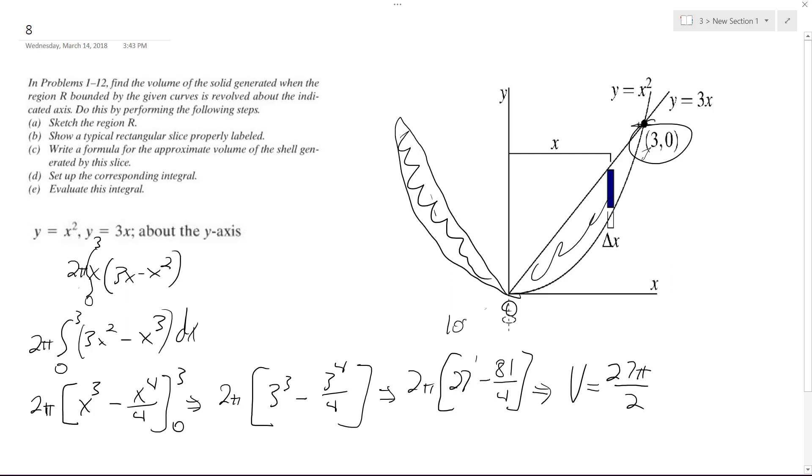Yeah, so this ends up being 108 divided by 4, then you get 54 over 2, which is 27 over 2, or 27 over 4, or 54 over 4, and then times 2, divided by 2. So yeah, 27 over 2.